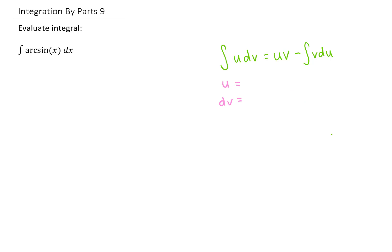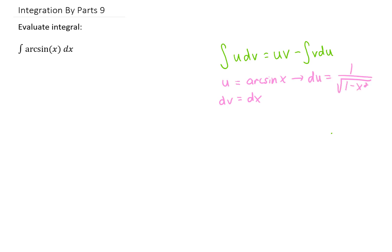So instead, we're going to use u equals arc sine of x. What that leaves in our integral is dv equals dx, and we have to recall the derivative of the arc sine of x. That is 1 over the square root of 1 minus x squared, and if we integrate to find v, we simply get x.